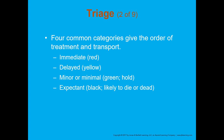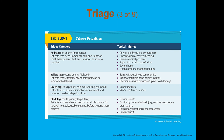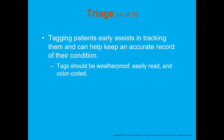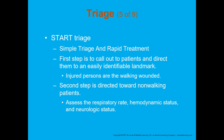There's a triage table here with good information about what you're looking for with red, yellow, green, and black tags — pause the video to review those triage priorities. Tagging patients early assists in tracking them and can help keep an accurate record of conditions. Tags should be weatherproof, easily read, and color coded — when we meet in class I'll be able to show examples of triage tags and we'll practice with those. START triage stands for Simple Triage And Rapid Treatment. The first step is to call out to patients and direct them to an easily identifiable landmark — those folks who can walk, we tell them to go walk somewhere.